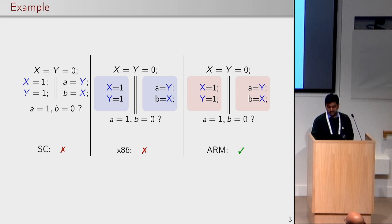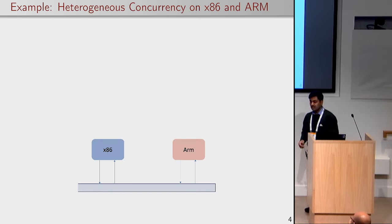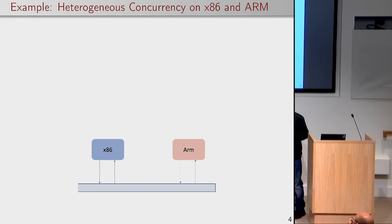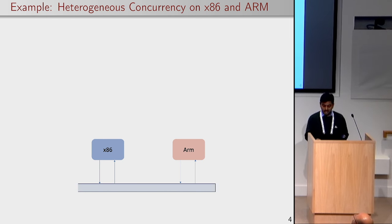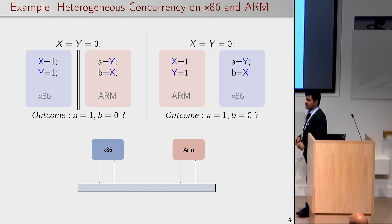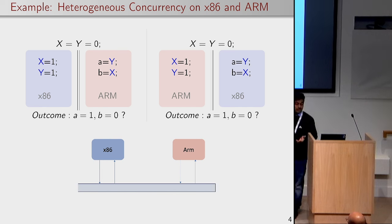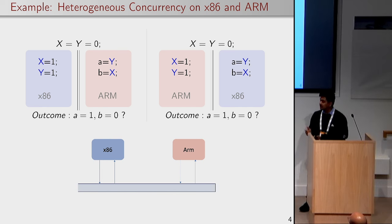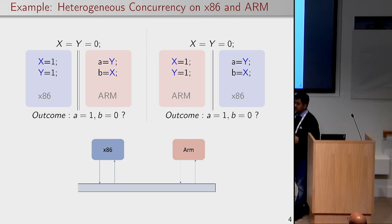If we go to the program running on x86, this execution will also not be possible because the write-write pairs and read-read pairs cannot be reordered. Whereas when we go to ARM processor these reorderings or the out of order executions are possible. From there on we can think of a system where we have x86 and ARM processor connected via shared memory. If we consider these programs where one thread runs on x86 and another on ARM, the question is whether these executions will be possible or not. Any idea?